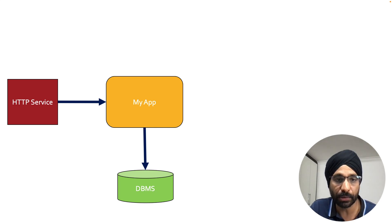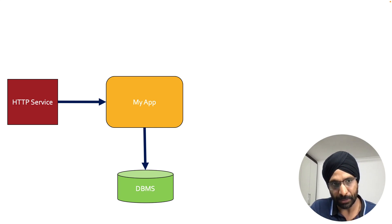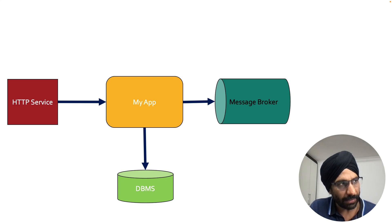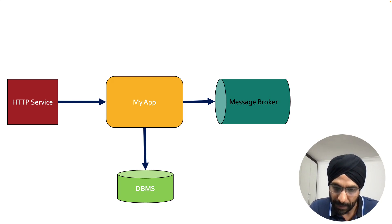We are storing into two databases, for example. So the message is coming to one route and then you're storing it into two databases — nobody knows about each other. The message is just coming to this central place. Now let's say tomorrow your business asks that you want to start sending events to some sort of message broker from the same destination. Apache Camel can very easily allow you to do that.